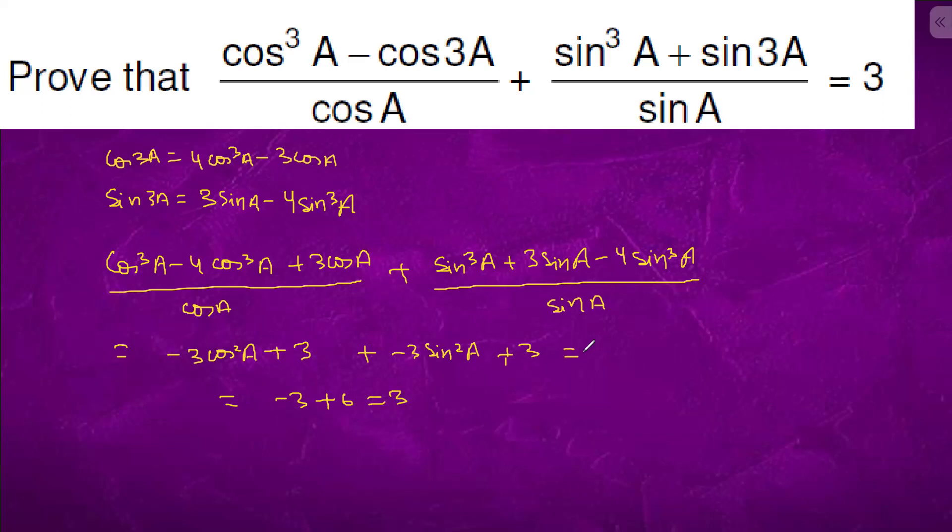What we did is: if we take 3 common, it was cos²A plus sin²A, and it was 3 plus 3 equals 6. Since cos²A plus sin²A equals 1, this gives us 6 minus 3 equals 3, which is what we needed to prove.